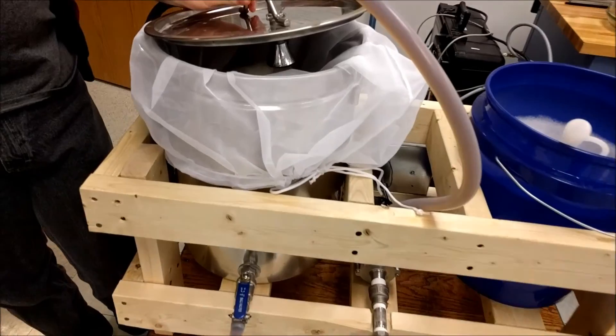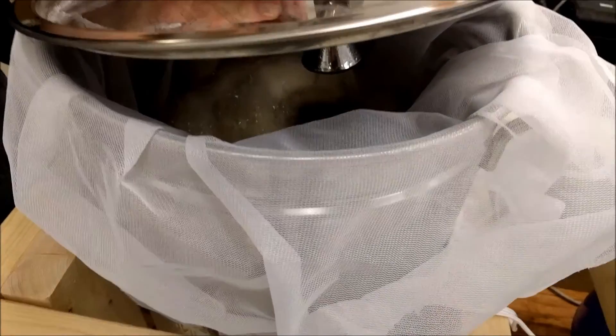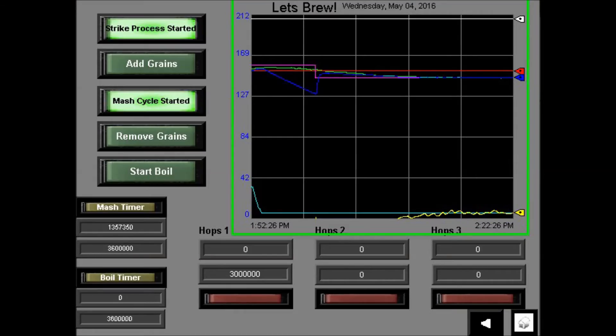Once the timer finishes, the user is notified and the next step is to remove the grains. After removing the grains and allowing the grains to drip from the bag, it is time to start the boil.